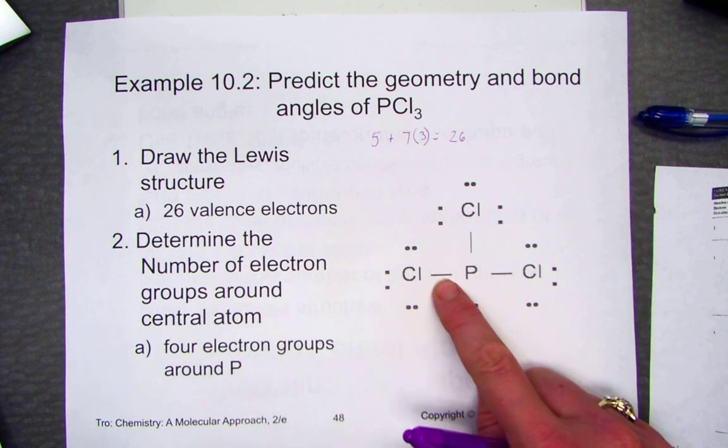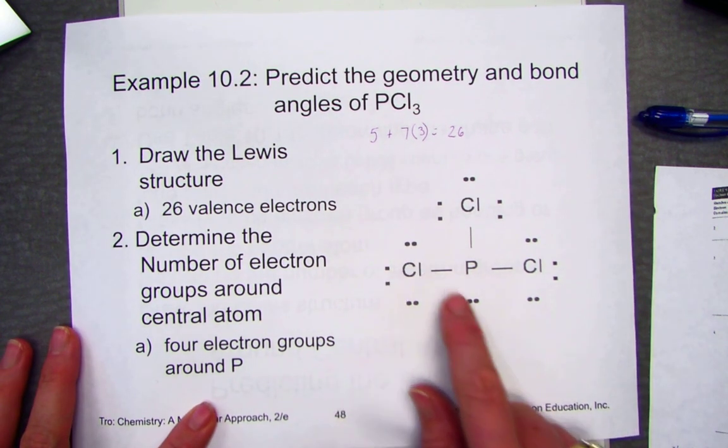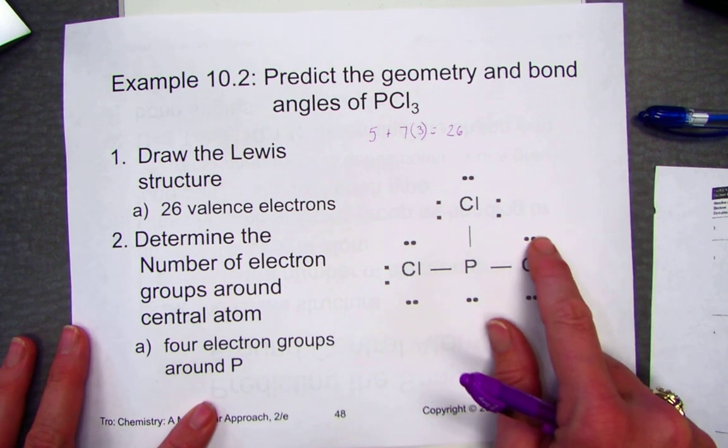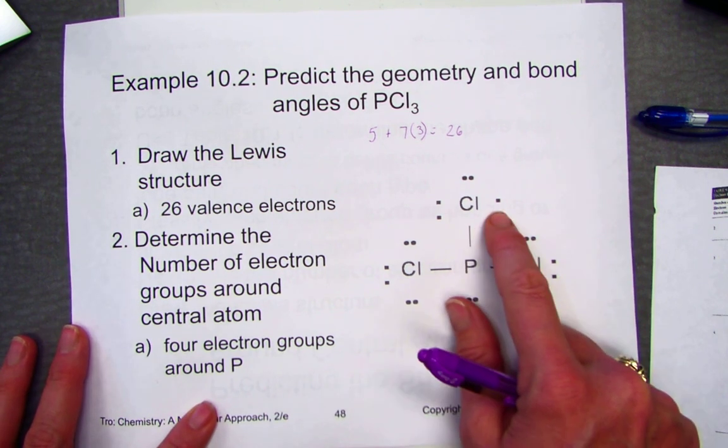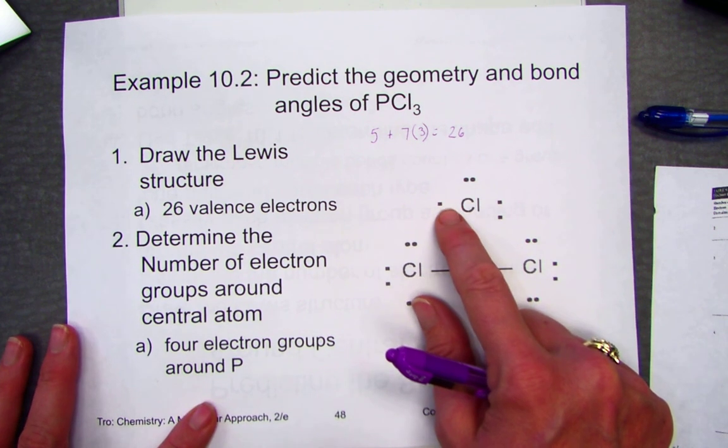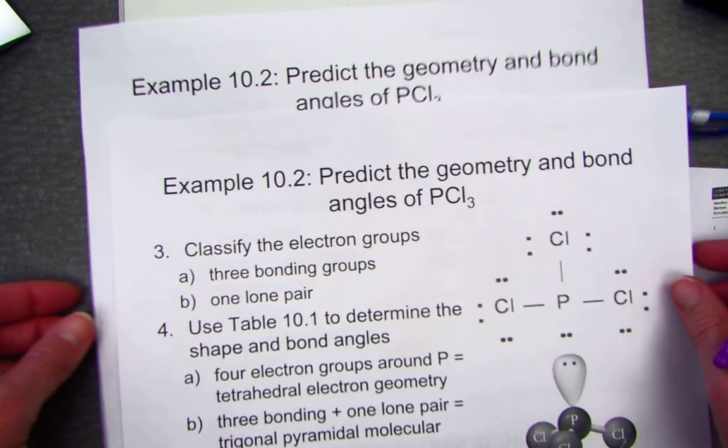Two electrons represented by a dashed line because that's a shared pair of electrons. Two, four, six, seven, eight, nine, ten, twelve, fourteen, sixteen, seventeen, eighteen, nineteen, twenty, twenty-one, twenty-two, twenty-three, twenty-four. Where did the other two go? Oh, down here.